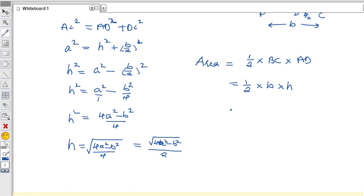So 1/2 × b × h. Instead of h, I can write √(4a² - b²)/2. If we simplify, finally we'll get (b/4)√(4a² - b²). This is the area of the isosceles triangle.